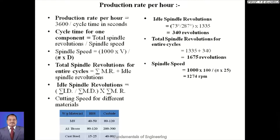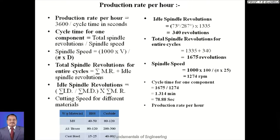Spindle speed = 1274 RPM. Idle spindle revolutions = 340. Total spindle revolutions = 1675. Cycle time = 1675 / 1274 = 1.314 minutes = 78.88 seconds. Production rate per hour = 3600 / 78.88 ≈ 46 components per hour.